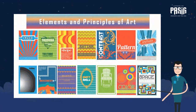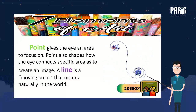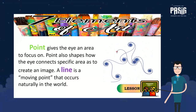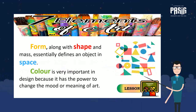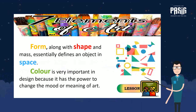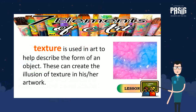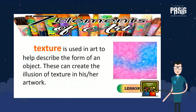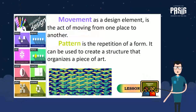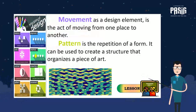Let's start with a brief recap on the different elements and principles of art. Point gives the eye an area to focus on and shapes how the eye connects specific areas to create an image. A line is a moving point that occurs naturally in the world. Form, along with shape and mass, essentially defines an object in space. Color is very important in design because it has the power to change the mood or meaning of art. Texture is used in art to help describe the form of an object and can create the illusion of texture in an artwork. Movement as a design element is the act of moving from one place to another, while pattern is the repetition of a form and can be used to create a structure that organizes a piece of art.